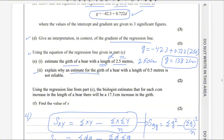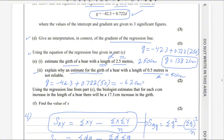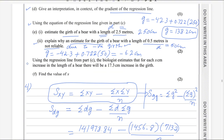Next part: explain why an estimate for the girth of the bear with length 0.5 meters is not reliable. 0.5 meters means d equals 50 centimeters. Now use this value in the equation. We will see — I think we will get a negative answer because this is a very small value. Negative girth does not mean anything, so it is not reliable. We get the answer as minus 6.2 centimeters. So it is not reliable due to the negative girth. Negative girth does not mean anything.